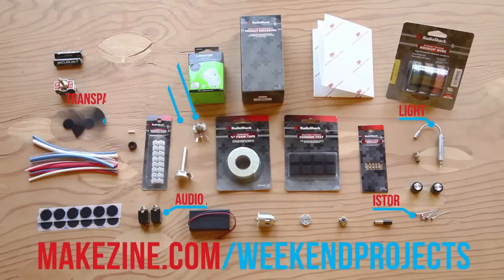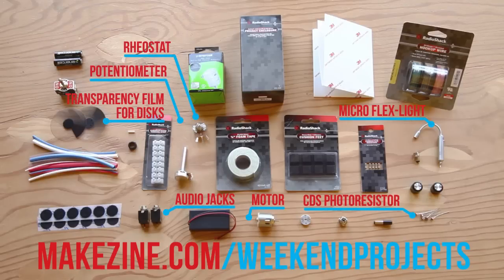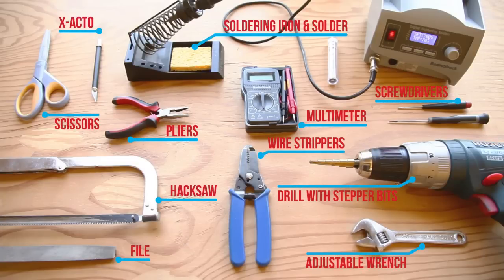Let's get started. Check out the project page for a complete list of the parts that you'll need. But the key parts of this build are a photoresistor, a pattern disc, a motor to spin it, and a light to shine on it. And you'll also want these tools.